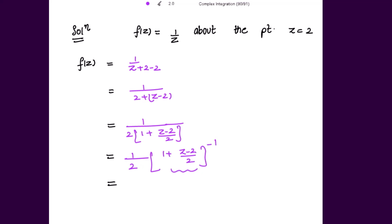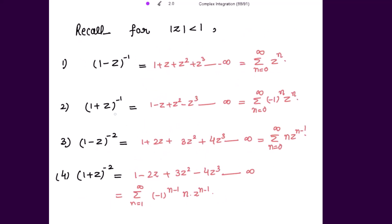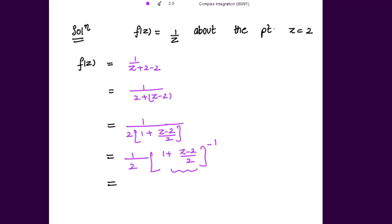To expand this, we use the formula for (1 plus z) to the power negative 1, which is summation n from 0 to infinity of (minus 1) to the power n times z to the power n. Here I have (z minus 2) over 2 in place of z. So keeping (1/2) as is and applying the formula, we get (1/2) times summation n from 0 to infinity of (minus 1) to the power n times ((z minus 2) over 2) to the power n.